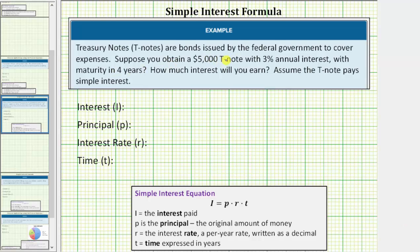Treasury notes or T-notes are bonds issued by the federal government to cover expenses. Suppose you obtain a $5,000 T-note with 3% annual interest with maturity in four years. How much interest will you earn? Assume the T-note pays simple interest.